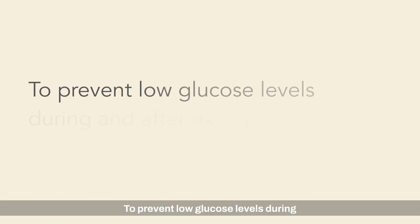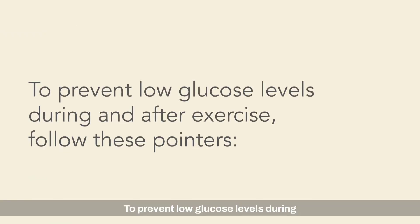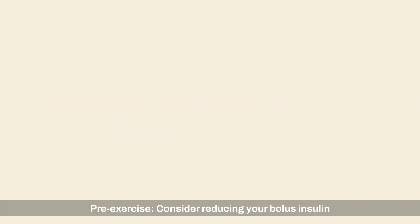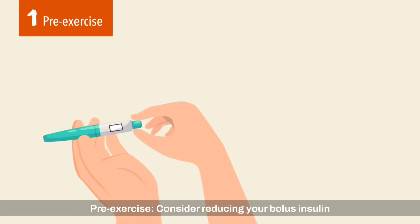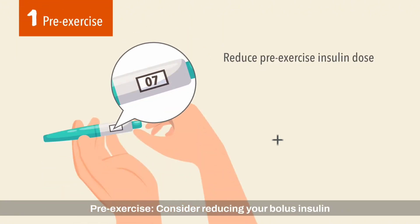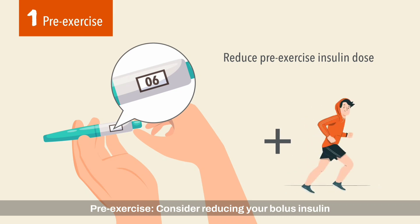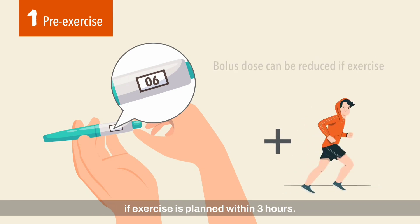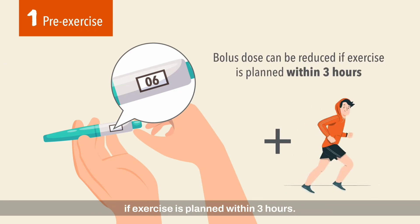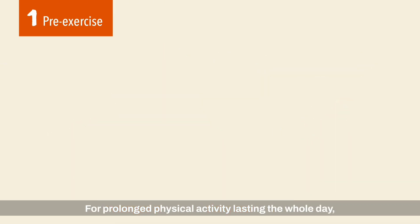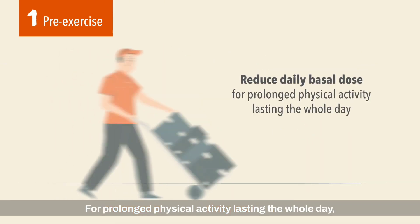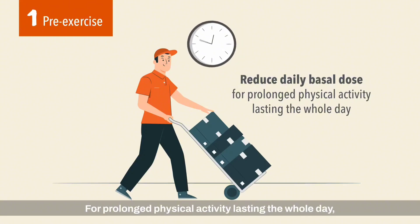To prevent low glucose levels during and after exercise, follow these pointers. Pre-exercise: consider reducing your bolus insulin if exercise is planned within 3 hours. For prolonged physical activity lasting the whole day, you may reduce your daily basal dose.